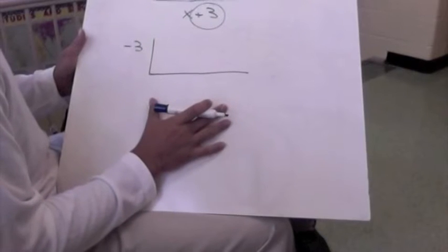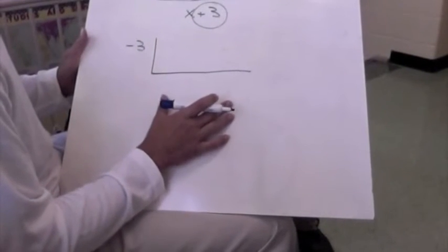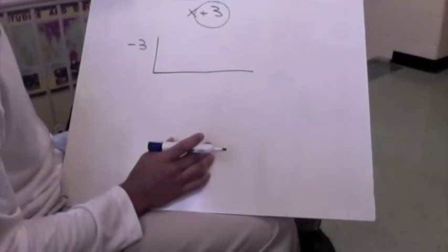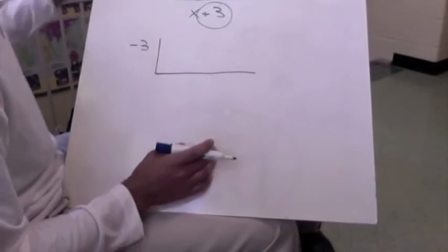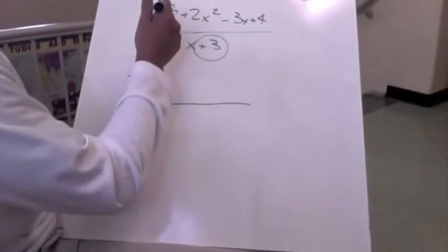So this is a format for synthetic division. Then we're going to take the coefficients for each cube, or square. So first, our highest power is 3, so we take that first.